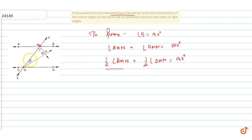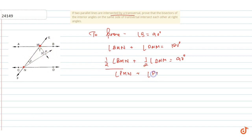Now, half of angle BMN is angle PMN, because the angle bisector divides the angle into two equal parts. Similarly, half of angle DNM is angle PNM. So angle PMN plus angle PNM equals 90 degrees.